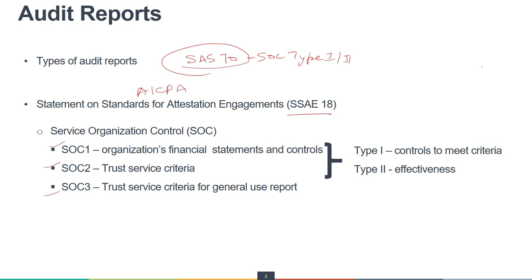SOC 2 is typically requested when you are hosting or processing any other type of information for clients or customers. SOC 2 reports are only provided to customers and require an NDA to be signed. Cloud vendors will probably never share a SOC 2 Type 2 report. SOC 2 Type 1 can be shared under NDA, but Type 2 can never be shared with any customer because it contains more details.